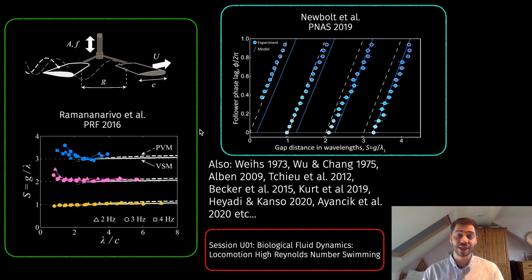The schooling number is just the distance between the wings divided by their wavelength. An integer schooling number means that a whole wavelength, the waveform of the wake, has been traced out by the time the follower hits it, whereas for half-integer multiples of the schooling number, that means just half a waveform of the wake has been executed.